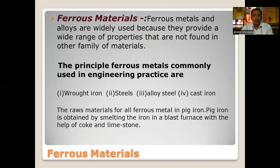Ferrous metals and alloys are widely used because they provide a wide range of properties not found in other families of materials. The principal ferrous metals commonly used in engineering are wrought iron, steel, alloy steel, and cast steel. The raw material for all ferrous metals is pig iron, which is obtained by smelting iron in a blast furnace with the help of coke and limestone.